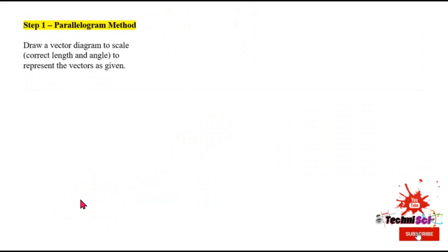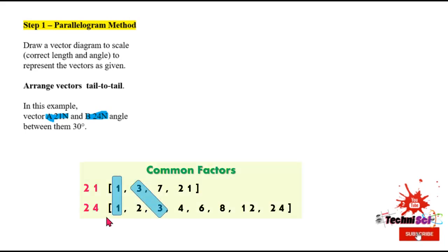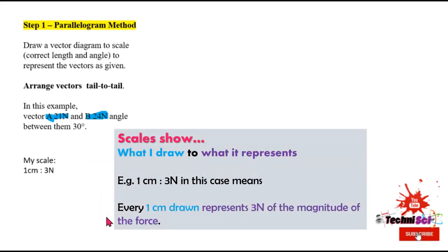So now let's look at the steps. Step one, we are going to be drawing a vector diagram to scale, which means we're going to be using the correct length and angle to represent the vectors given. We're going to arrange the vectors tail to tail for the parallelogram method. In this example, vector A is 21 newtons and vector B is 24 newtons. So first off, we need to find a factor that is common to both A, which is 21 and B, which is 24. Looking at the factors, three is common to both. And I think I want to work with a scale of 1 to 3.